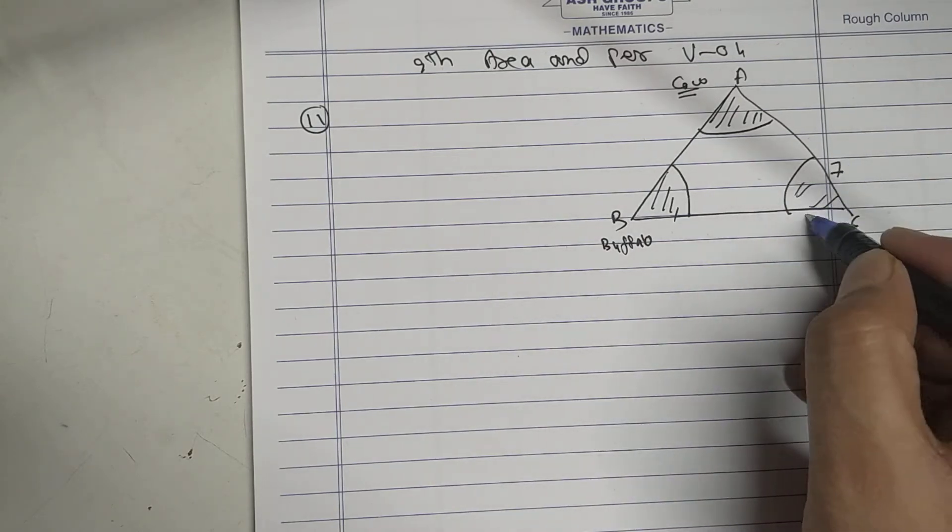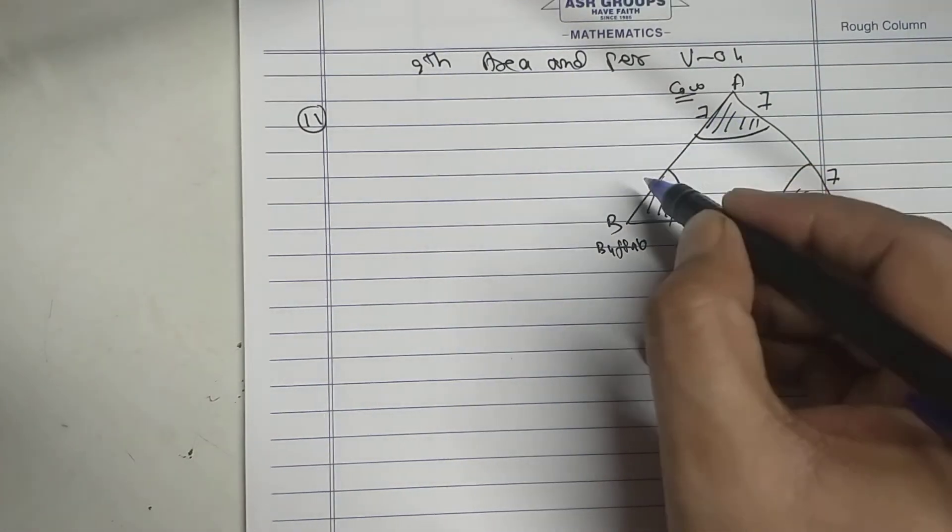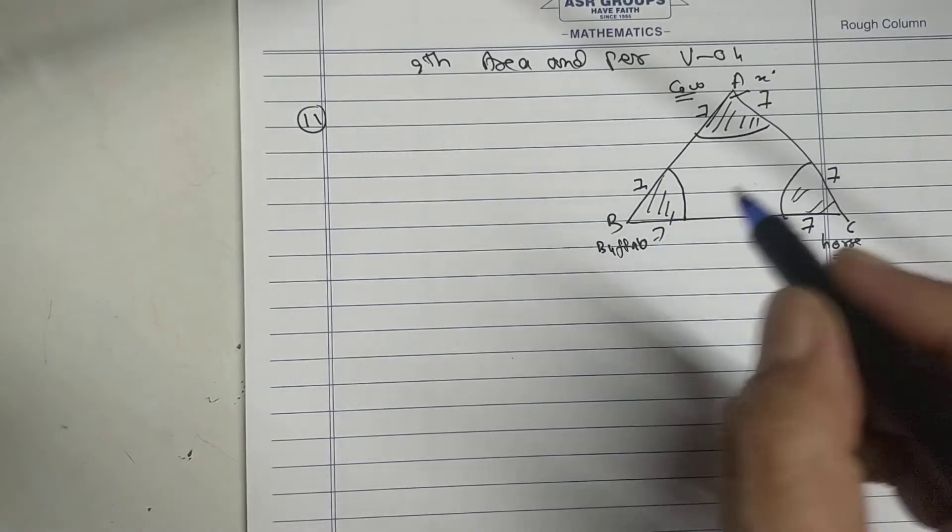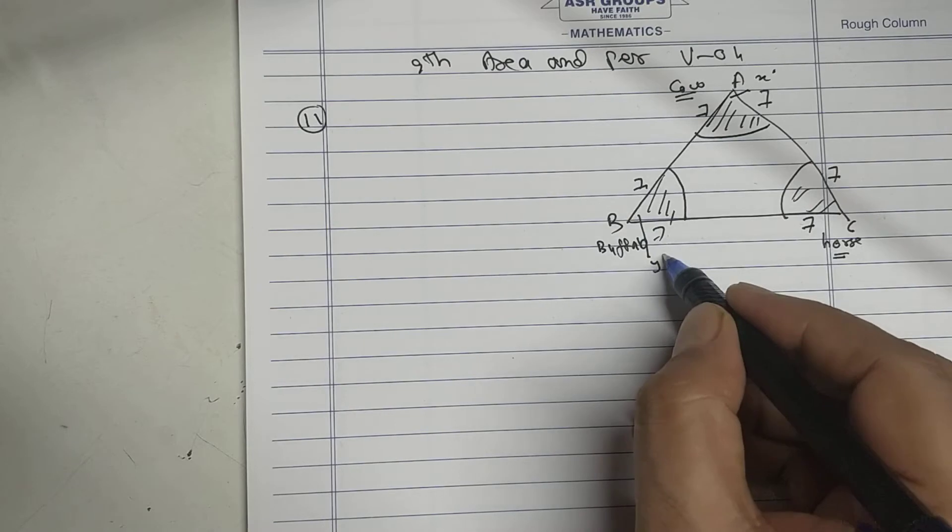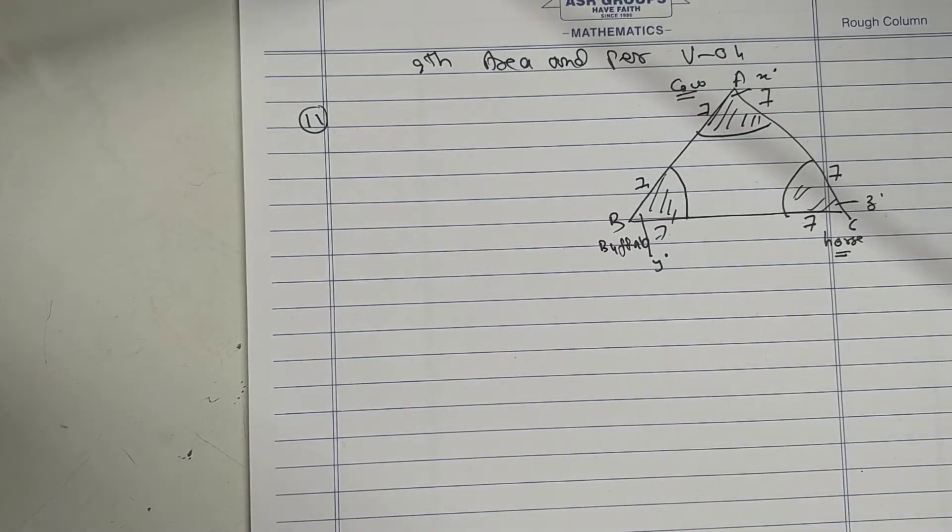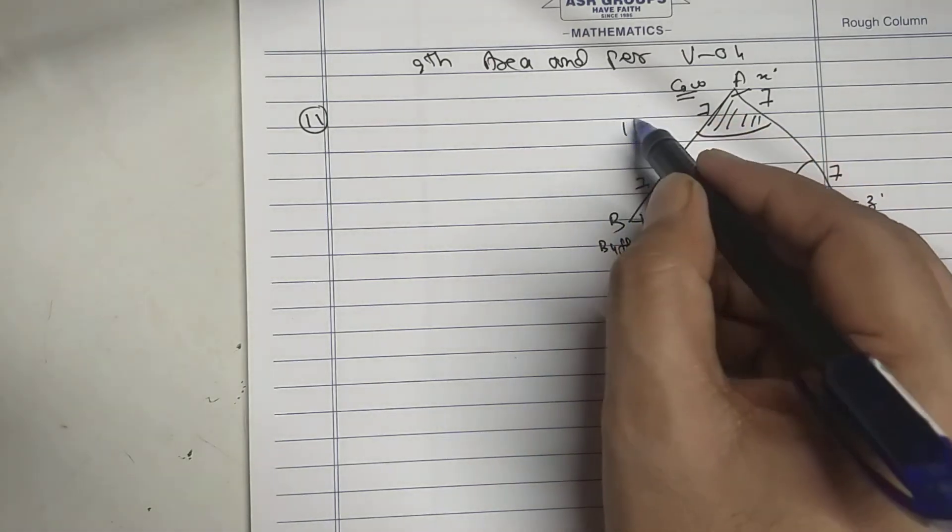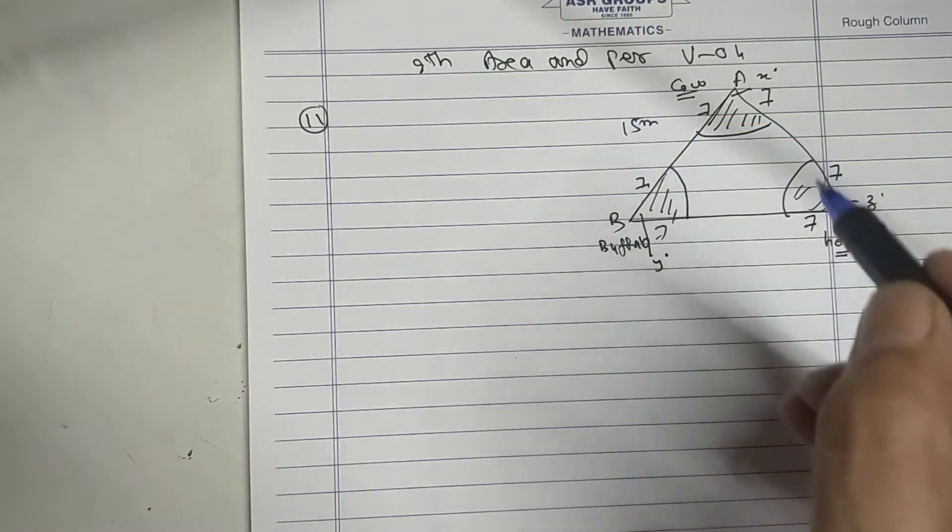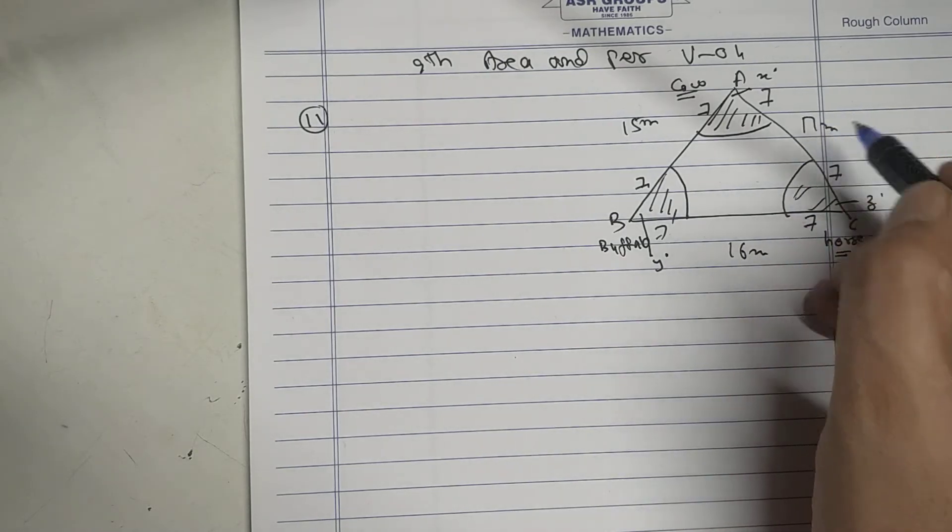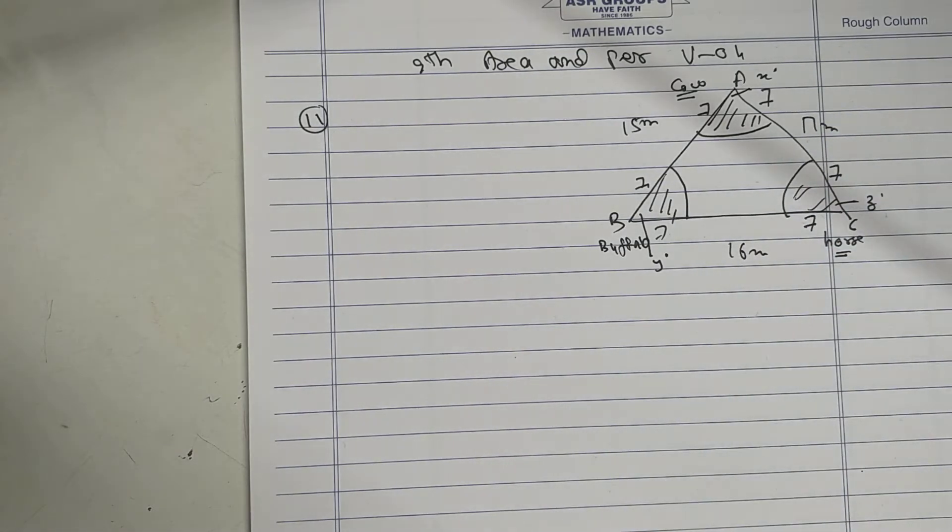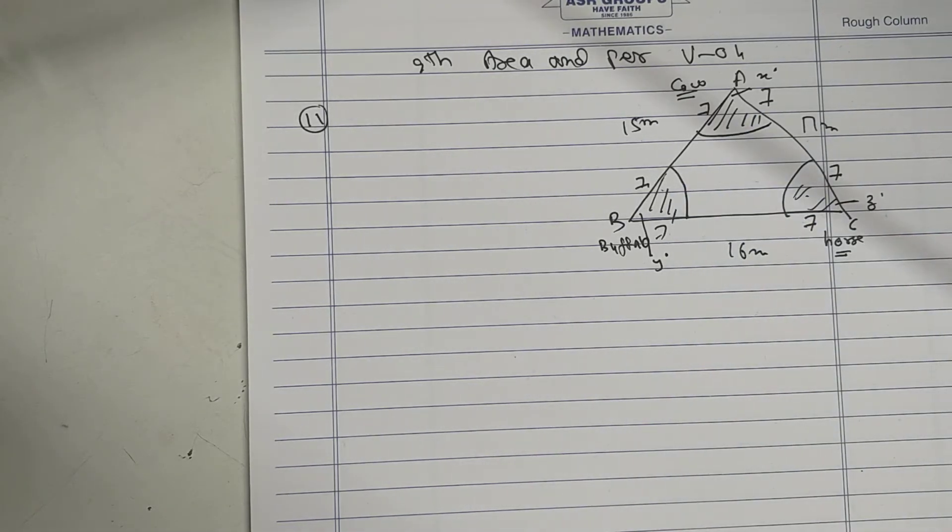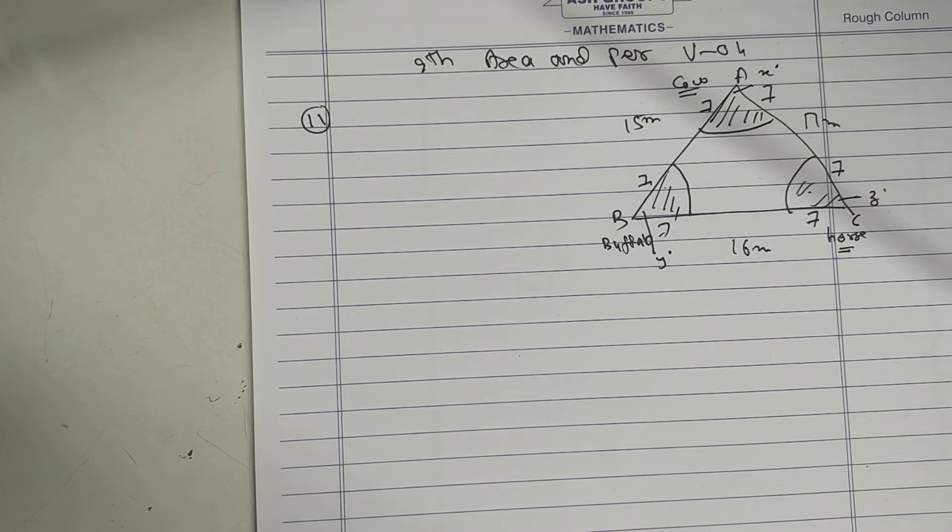All are seven meters. This angle is x degrees, this angle is y degrees, this angle is z degrees. AB is 15 meters, BC is 16 meters, AC is 17 meters. From the area of triangle, if I minus these three sectors, I get area that cannot be grazed by three animals.